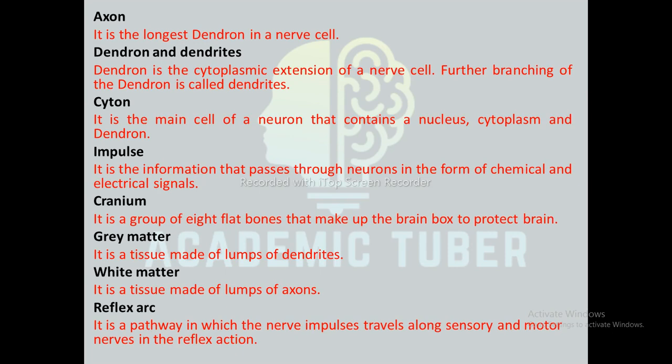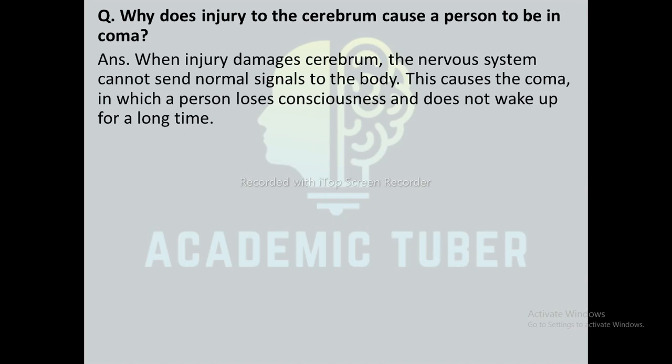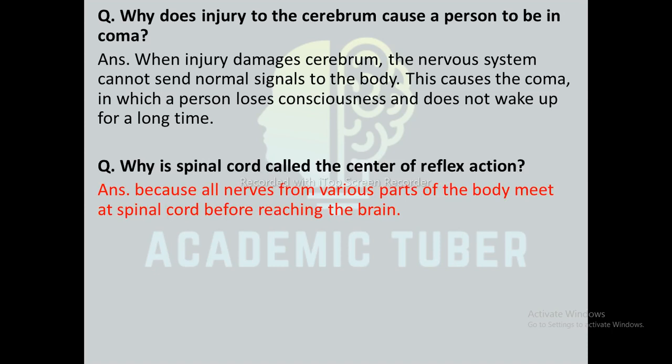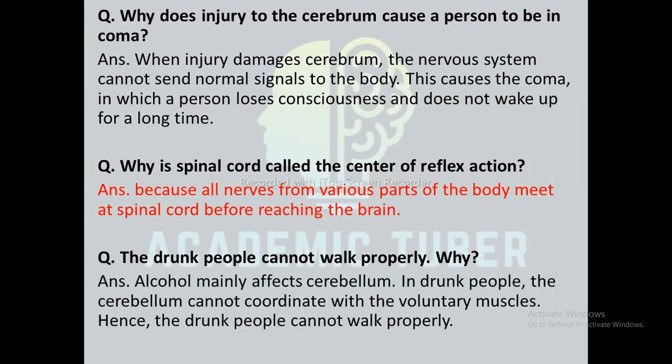Reasoning questions: Why does injury to the cerebrum cause a person to be in a coma? When injury damages the cerebrum, the nervous system cannot send normal signals to the body, causing the coma in which a person loses consciousness and does not wake up for a long time. Why is the spinal cord called the center of reflex action? Because all nerve signals from various parts of the body meet at the spinal cord before reaching the brain.